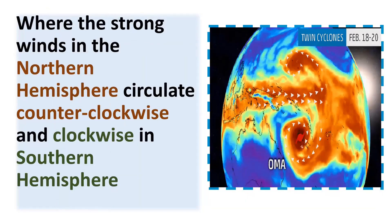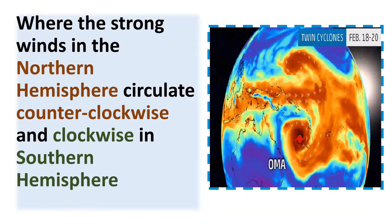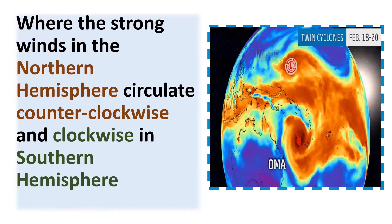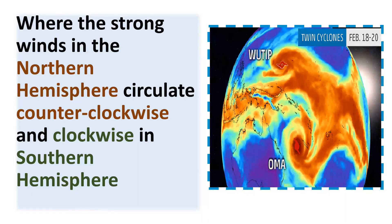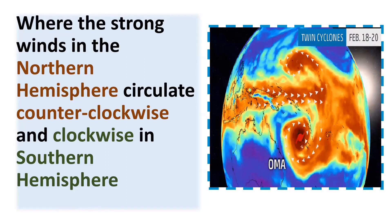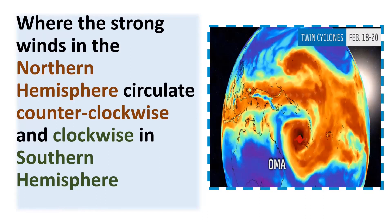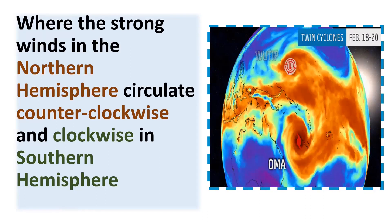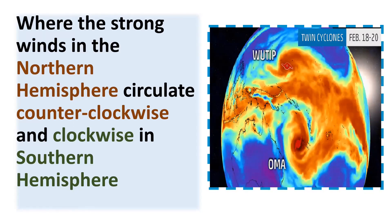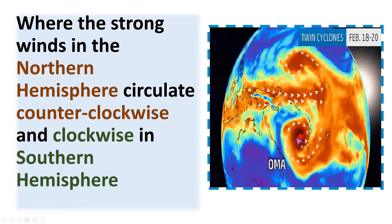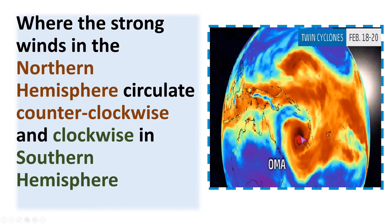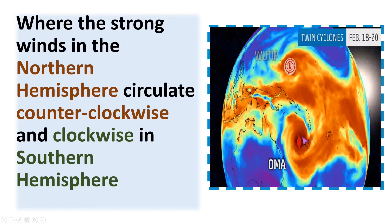The Earth has the Northern and the Southern Hemisphere. When there is a strong wind in the Northern Hemisphere, it circulates counterclockwise. While in the Southern Hemisphere, it circulates in a clockwise pattern.